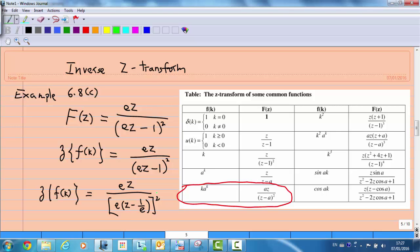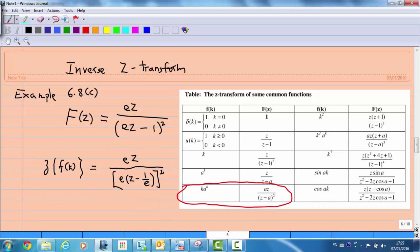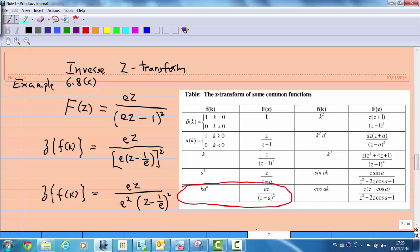Then, you may want to use the formula for indices. For instance, we know that a² times b² is equal to (ab)². So the denominator is equal to e² times (z - 1/e)².